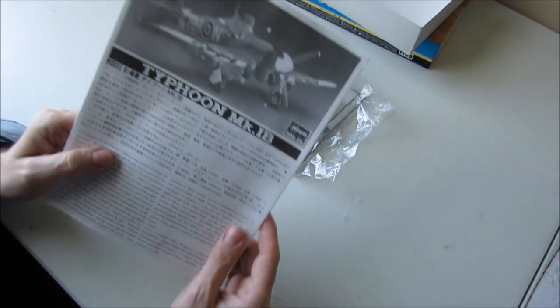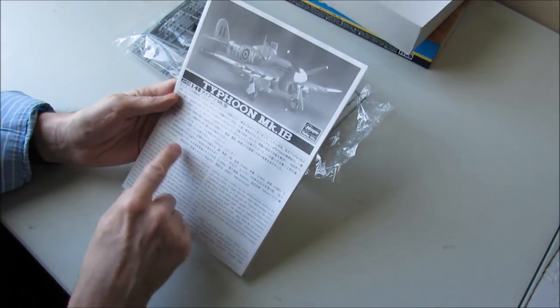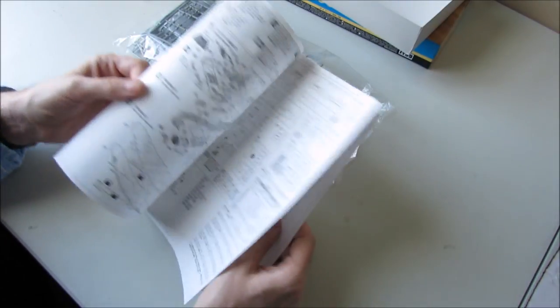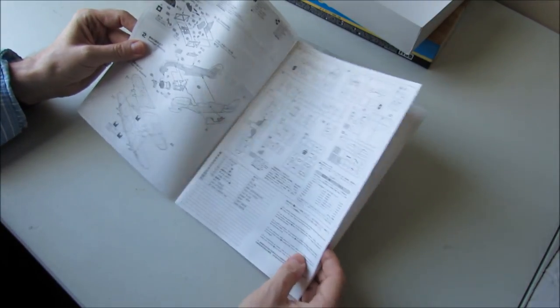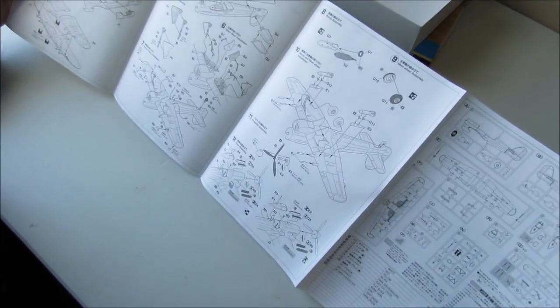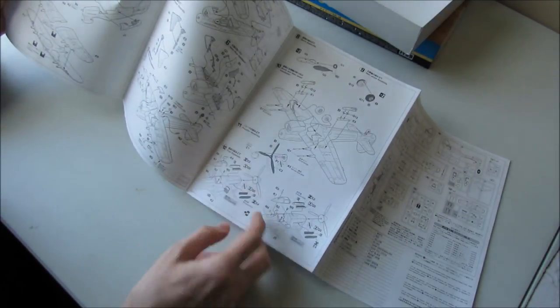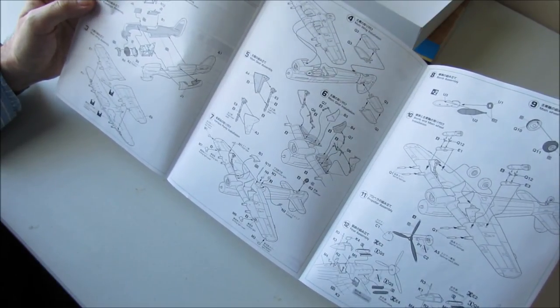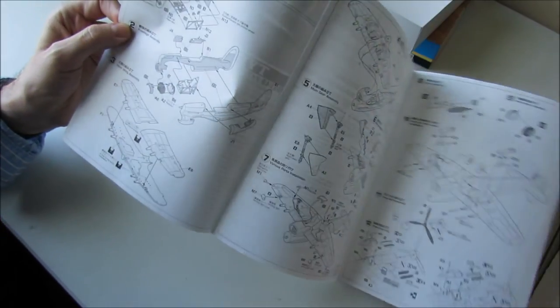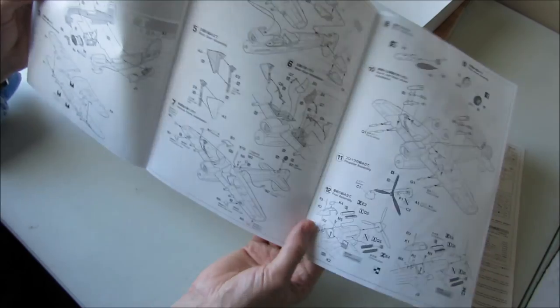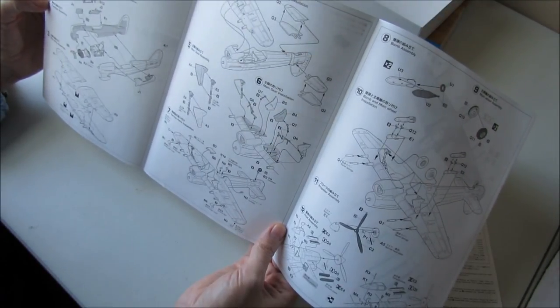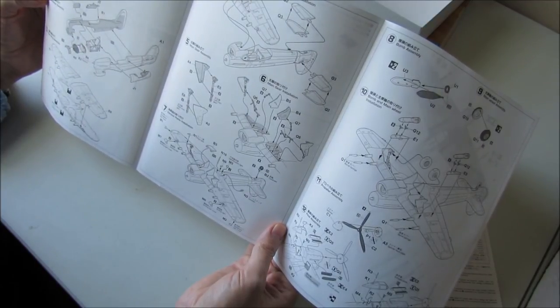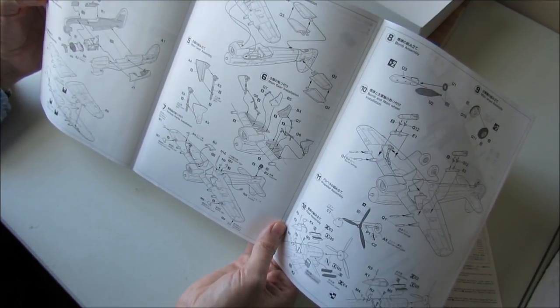Alright, instruction booklet. Gives you a brief history of the type of typhoon it is, what squadron it was used in. Let's open her up, we have 12 separate assembly instructions starting off with a cockpit as usual and the two fuselage halves, and the wing assemblies.